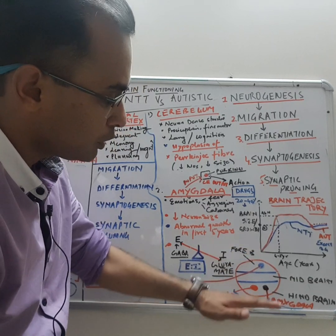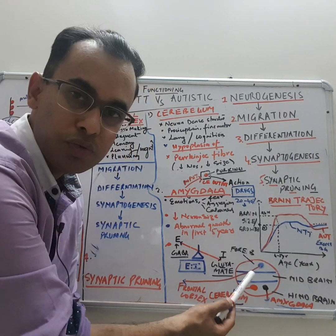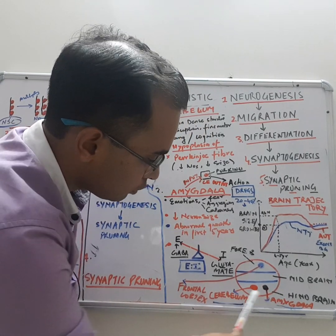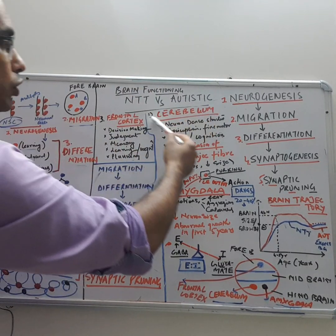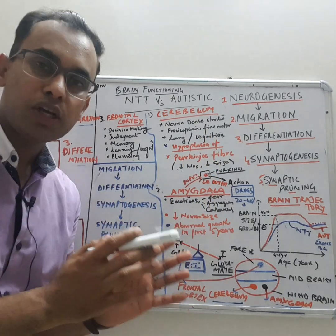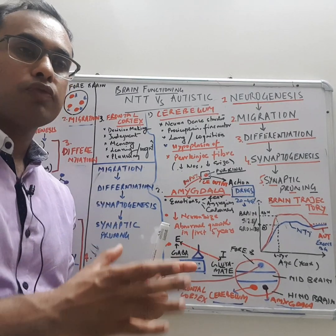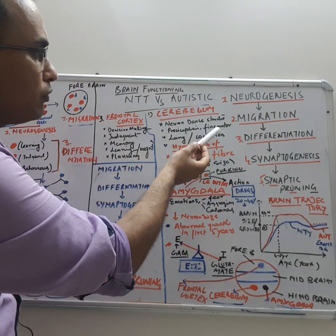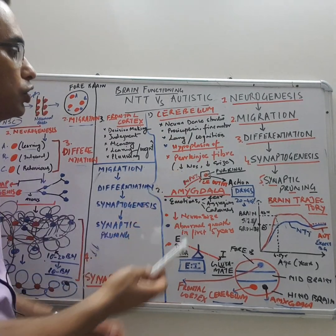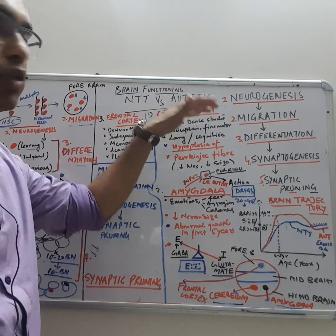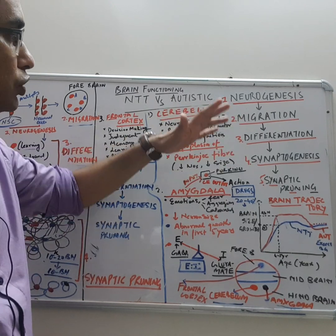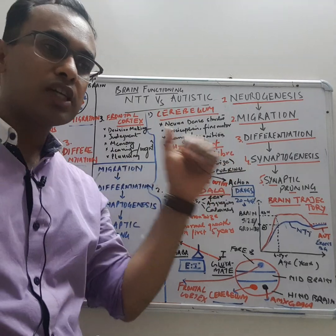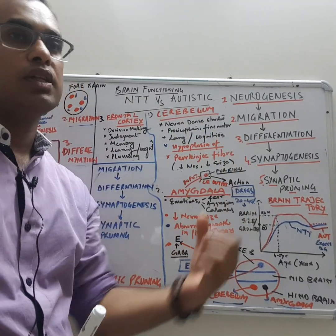First we will discuss the hindbrain. In the hindbrain there are two structures I have plotted: one is called the cerebellum, and the other is the amygdala. The cerebellum is a neuron-dense structure — neurons are the backbone of the brain, responsible for transmitting signals to every part of the body. The cerebellum is involved in proprioception, fine motor activities, language, and cognition. They say there is an overgrowth of the cerebellum in the first four to five years of life, and also a hypoplasia of this neuron-dense structure, which affects the child's ability to carry out functions.